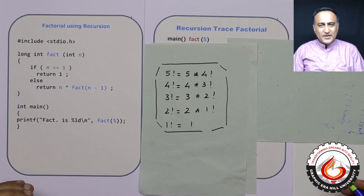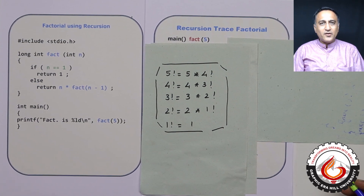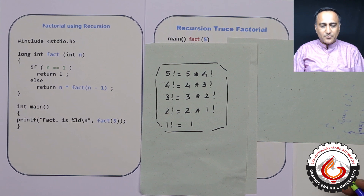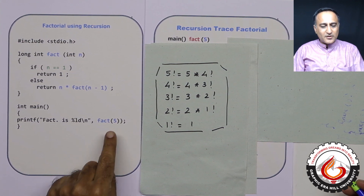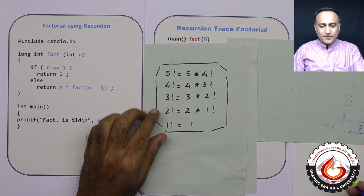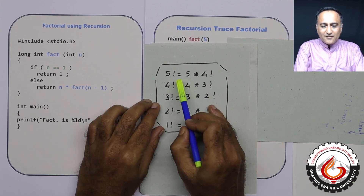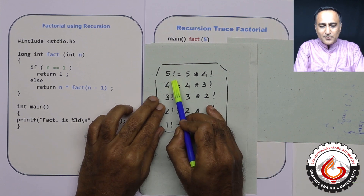We shall now develop a code to calculate the factorial of a number using recursion. To summarize, in order to calculate the factorial of the number 5, I can follow this particular process.